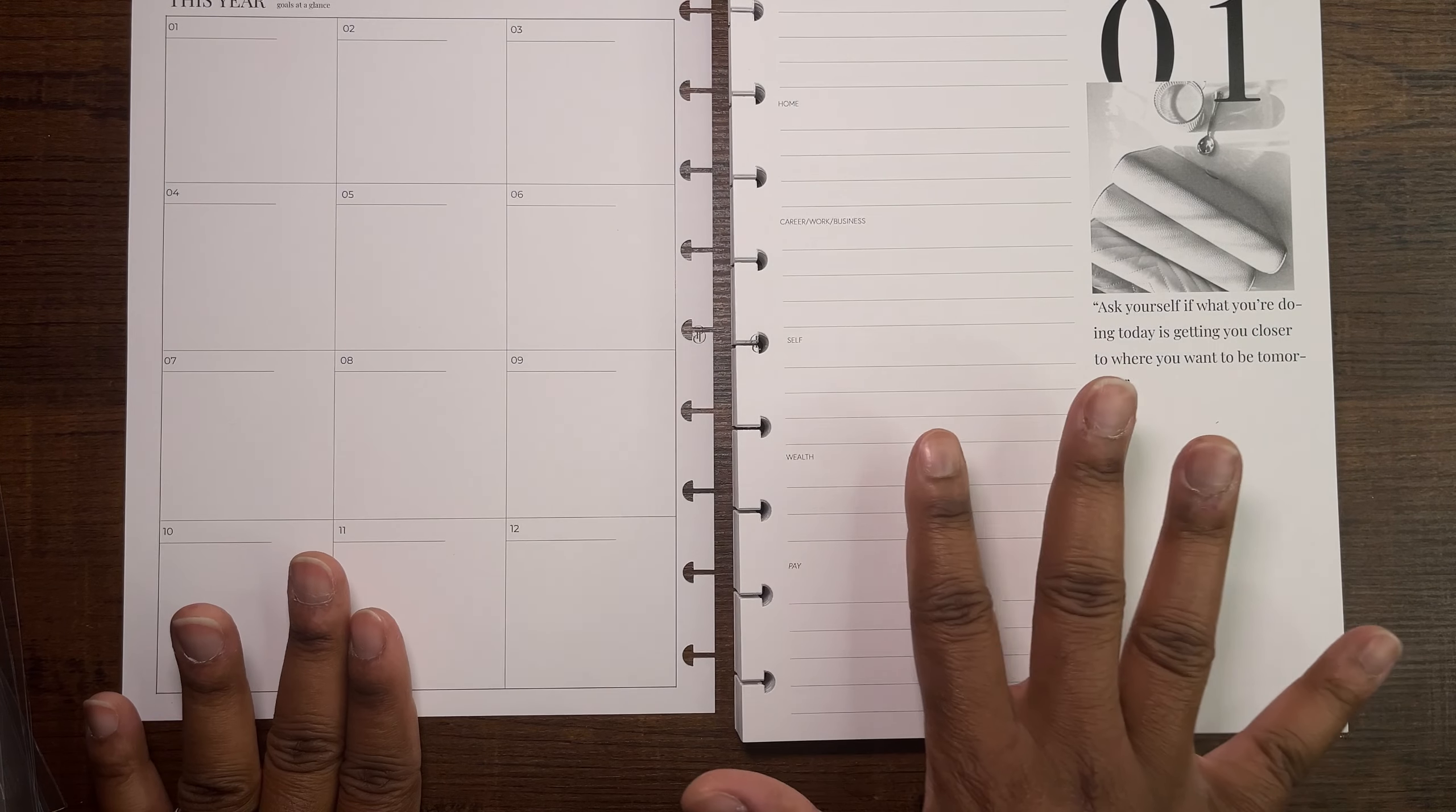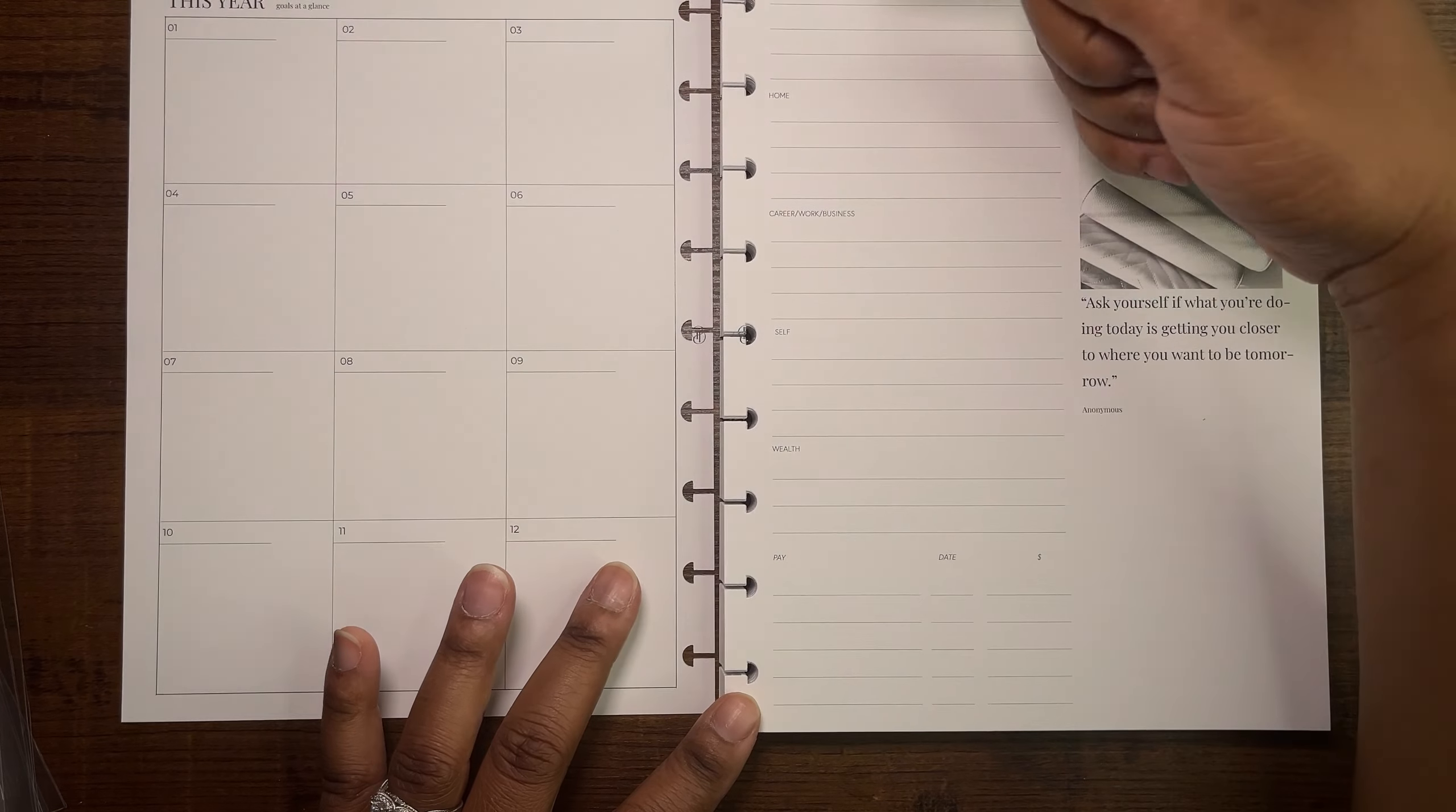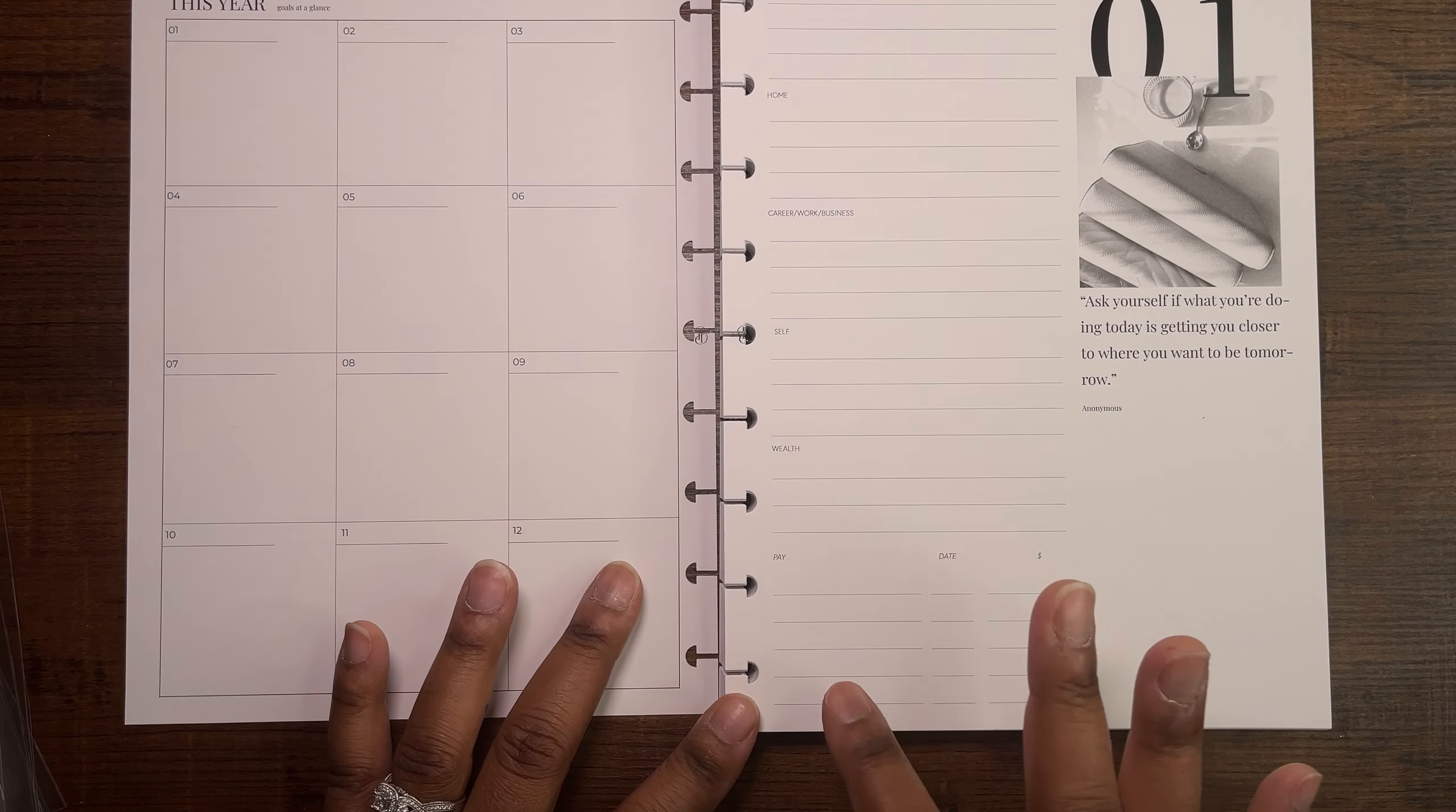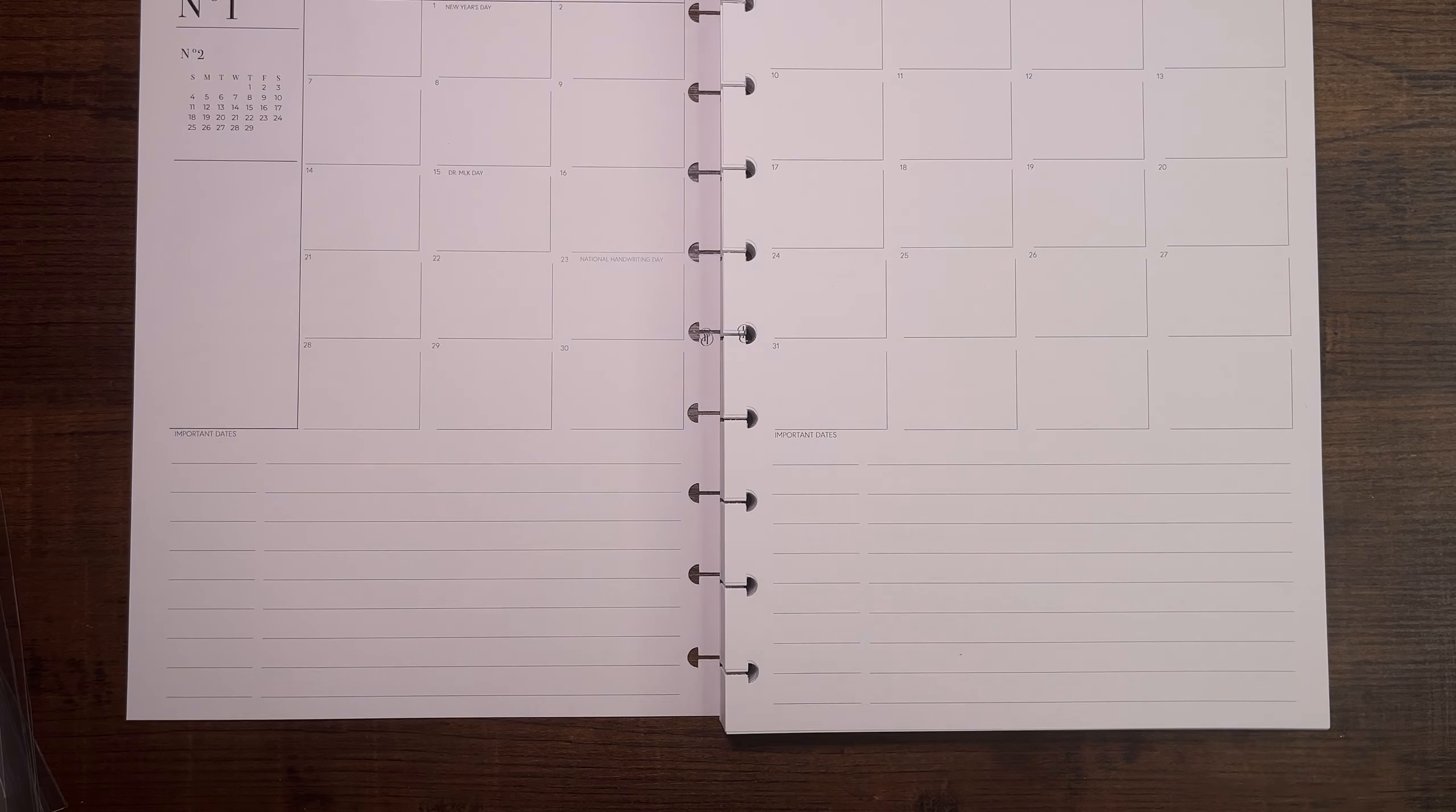This is cool. She has over here 'This Year' and I like that you could just put whatever it is that you choose. This is real sophisticated. Sis has a quote here, then she has different sections that you could write goals. You can write goals about your health, home, career, work, business, self, wealth. Then she has a small spot here where you could document any bills you need to pay. Of course you could add a sticker there if you choose to.